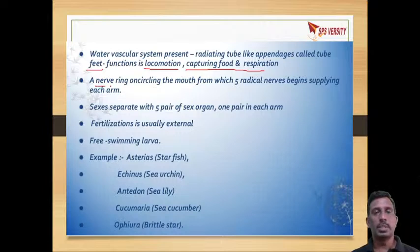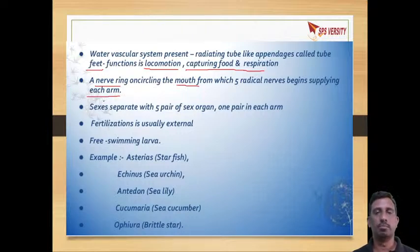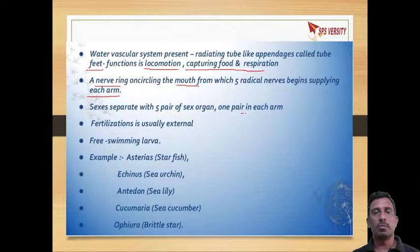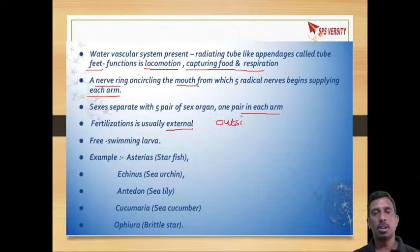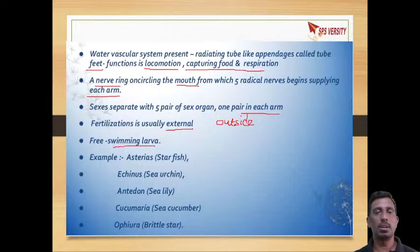A nerve ring is present encircling the mouth, which supplies nerves to each and every arm. Sexes are separate, with five pairs of sex organs — one in each arm. Fertilization is external, taking place outside the female body. There is a free-swimming larva.